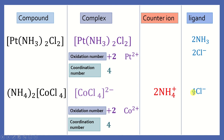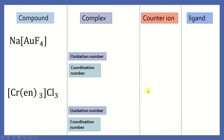How about these examples? Can you recognize the complex? What is the oxidation number of the metal ion? What is the coordination number? Do you have a counter ion? And what are the ligands? You can pause the video and come back when you are done to check the answer.